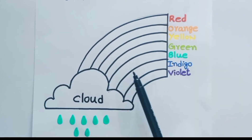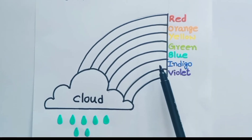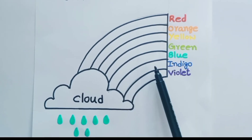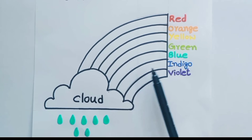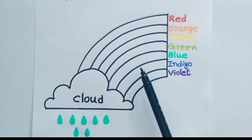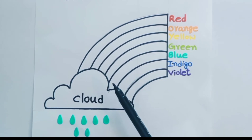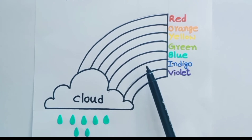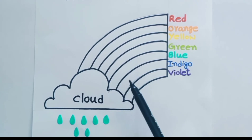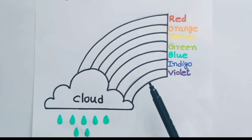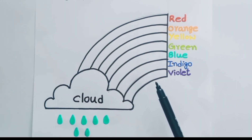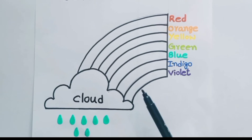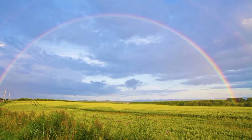Now look here children — what is this? It is a rainbow. Tell me, what is the shape of the rainbow? Yes, you're right — it is an arc. A rainbow is an arc of different colors. Where do we get this rainbow? Yes, in the sky.